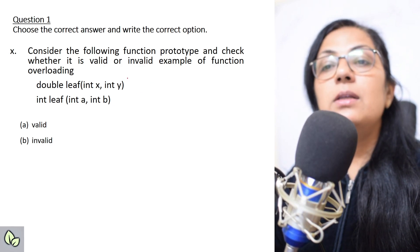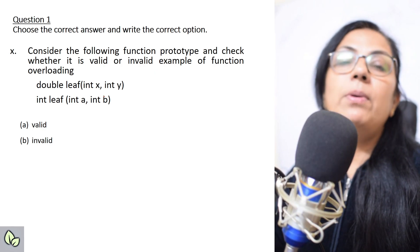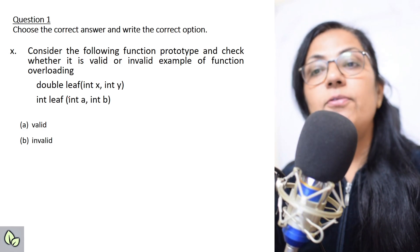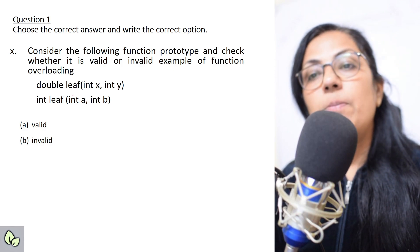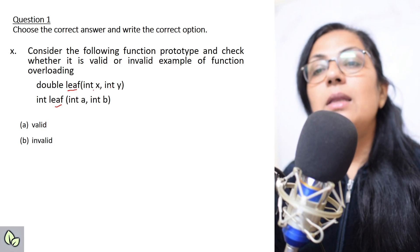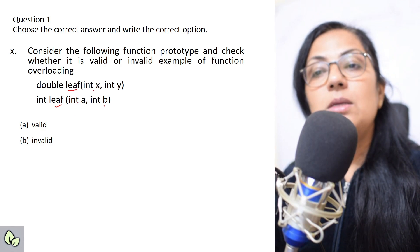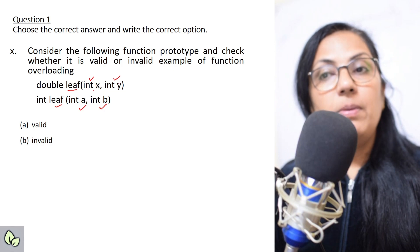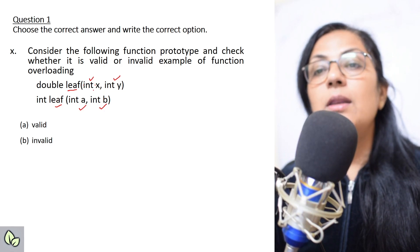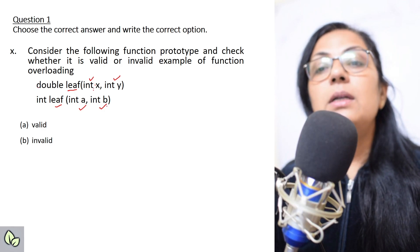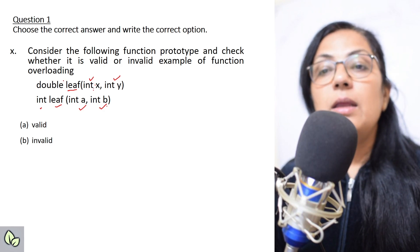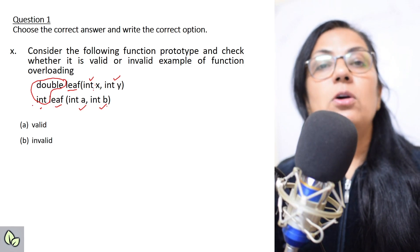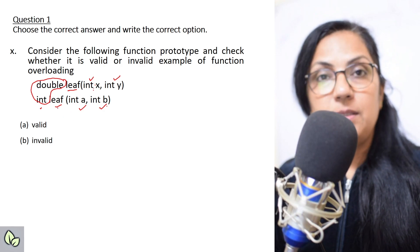Consider the following function prototypes and check whether it is a valid or invalid example of function overloading. In function overloading the function name should be the same but differentiated by number or type of parameters. The function name is the same. Both have two int-type parameters — variable names are different but that doesn't matter. The return type is different (double vs int), but function overloading never depends on return type. So it is invalid.